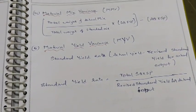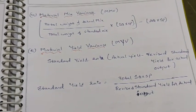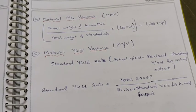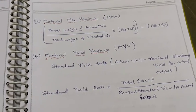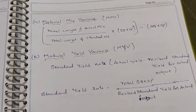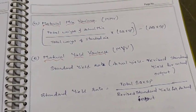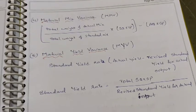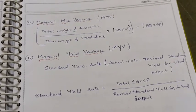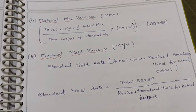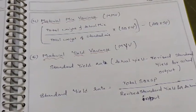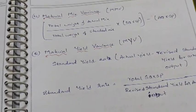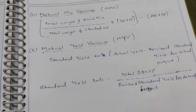These are the five formulas in case of material variances. The same formulas will apply for labour variances as well — except where we talked about cost, there we have to talk about hours, that is, labour hours. Please note down these formulas.